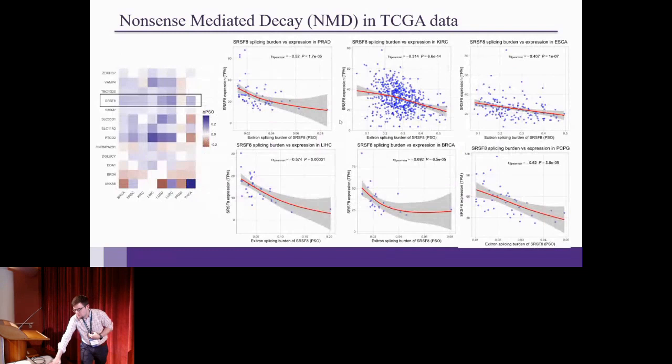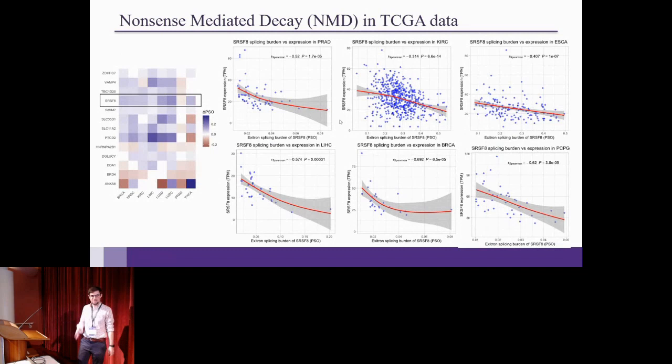So just going back to SRSF8, here are SRSF8 correlation plots across a bunch of different cohorts. And we find that indeed, we do have this dose-dependent reduction of gene expression with PSO change. And if you look at the GenCode annotation, there is an annotated intron sort of in a fragment of a transcript. This isn't actually a full transcript in GenCode. It's kind of like one of the fragmented transcripts. But the exotrons that you find in TCGA data is actually much more diverse. In fact, this is the annotated one right there, the one in the red box. Its splicing frequency is about 29%. And you find a bunch of these other introns in the 3' UTR that can also trigger NMD.